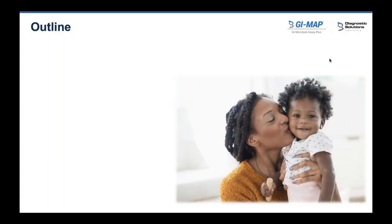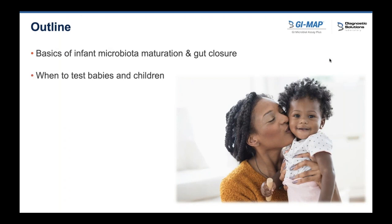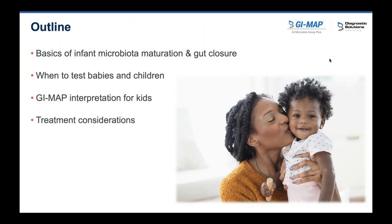Today's outline: we're going to talk about the basics of the infant microbiota and how it develops over the first couple of years. Then we'll talk about when to test babies and children, and then interpretations — which is the bulk of the presentation — covering how to interpret the GI map for children, what's a little different, what's the same, and how to not panic. Then we'll talk about treatment and go over one to two cases.